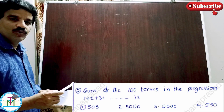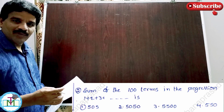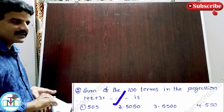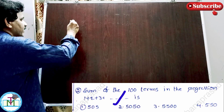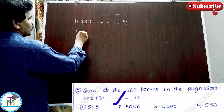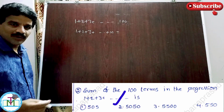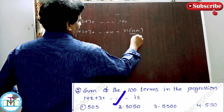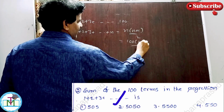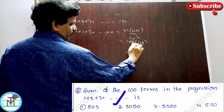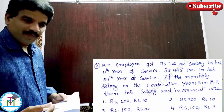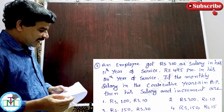Question number 2: the sum of the first 100 terms in the progression 1 plus 2 plus 3 plus so on. We know the formula for the sum of the first n natural numbers is n into n plus 1 by 2. Put n equal to 100: 100 into 101 divided by 2. 2 goes 50 times, so 50 into 101 equals 5050. Therefore option 2 is the right answer.